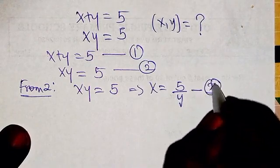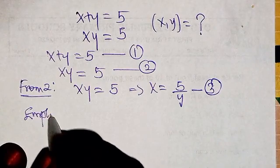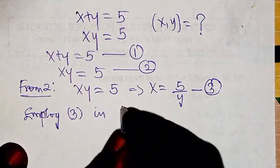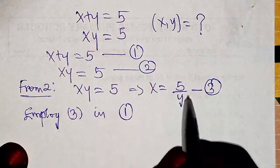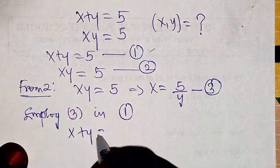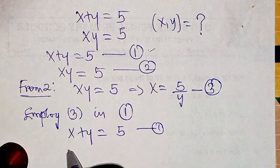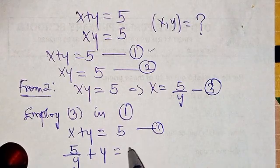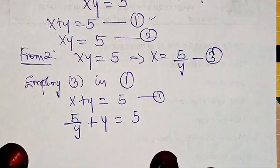Let me call this equation three. Now we are going to employ equation three in equation one. So substituting into equation one, x plus y equals 5 becomes 5 over y plus y equals 5.